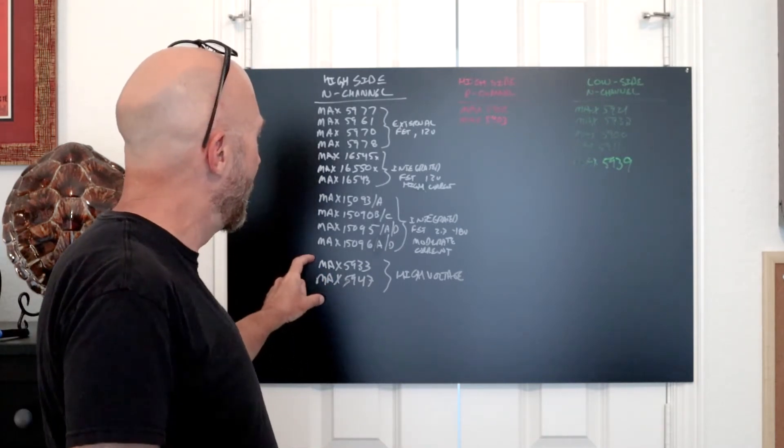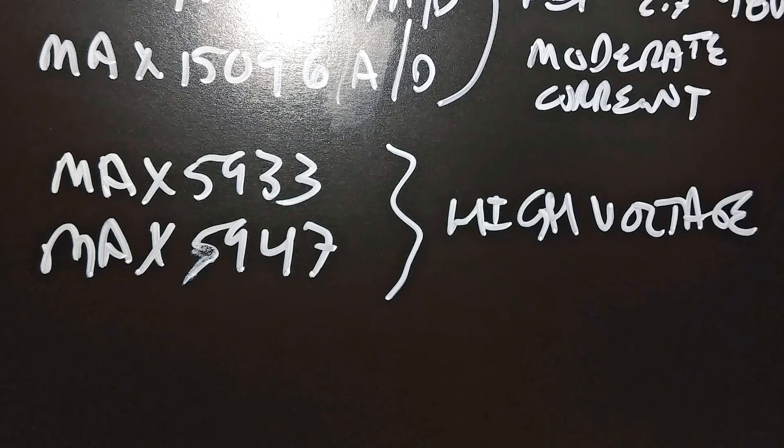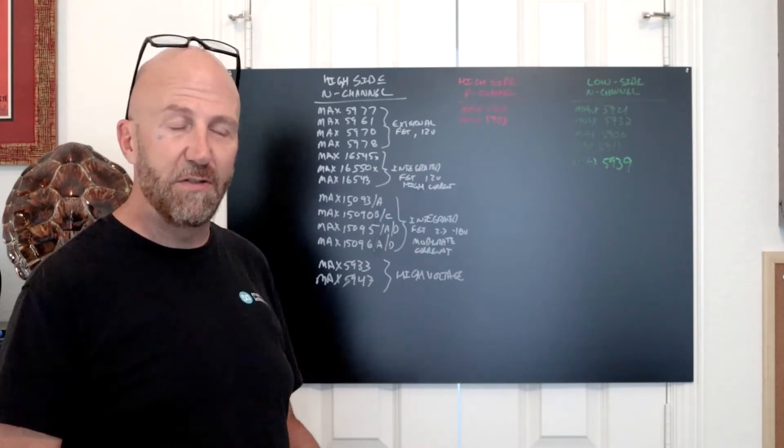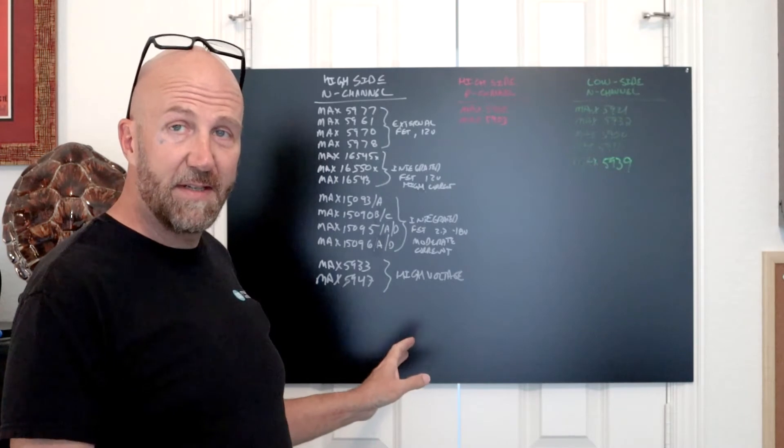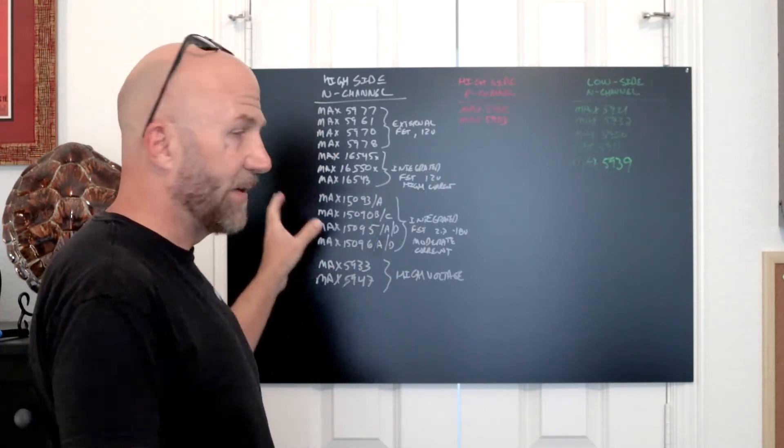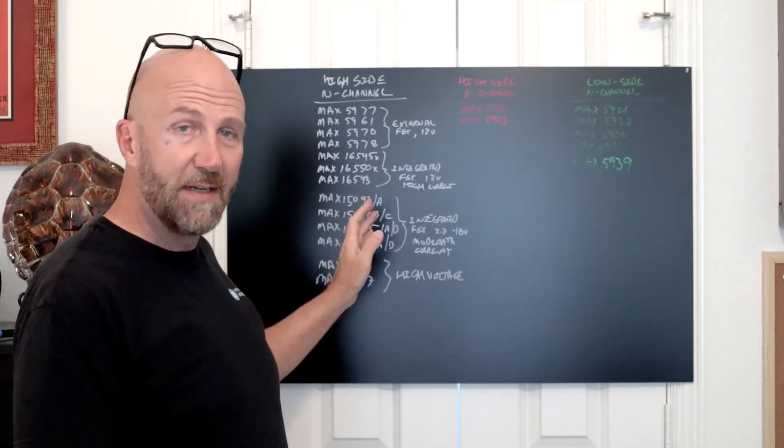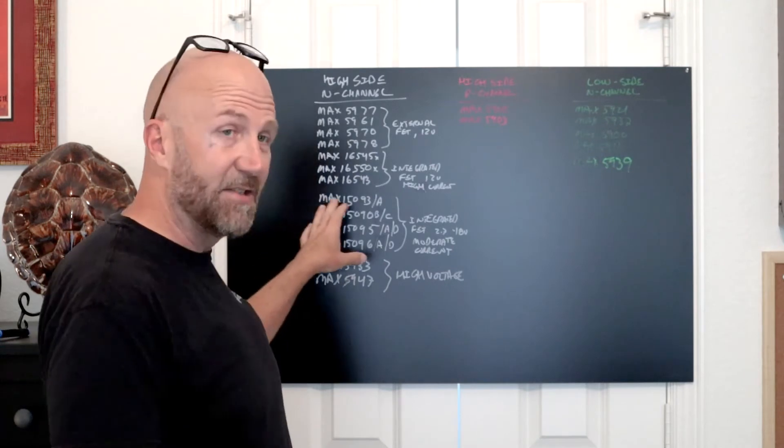Finally, for high voltage, we have parts like the MAX5933 and MAX5947, which drive a high side N channel FET and are useful for 48 volt or 72 volt positive hot swap applications. This is not a comprehensive list—these are just some parts you're going to see frequently because they're good performers with relatively modern designs.